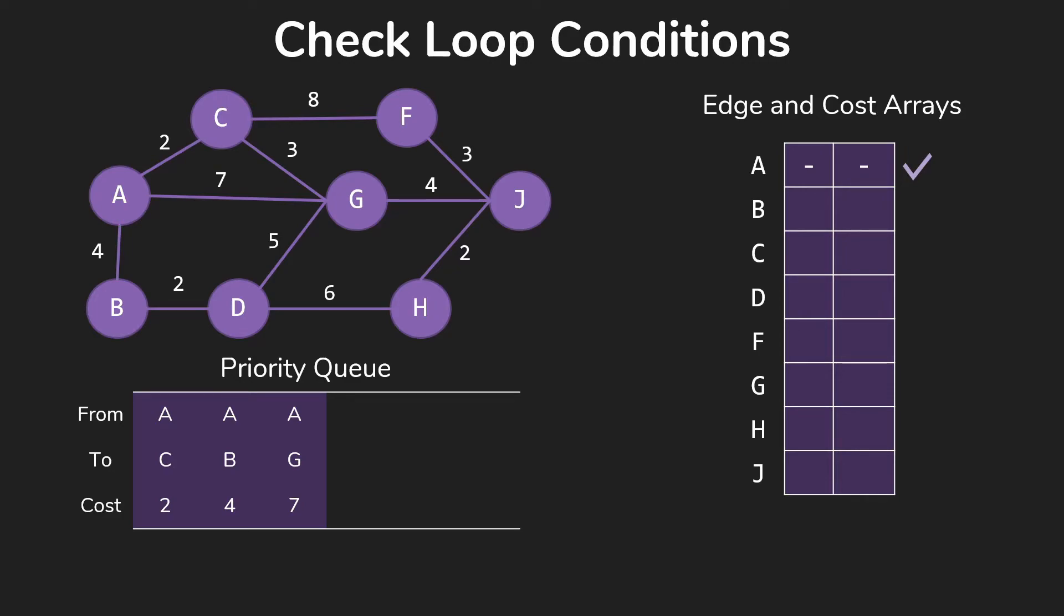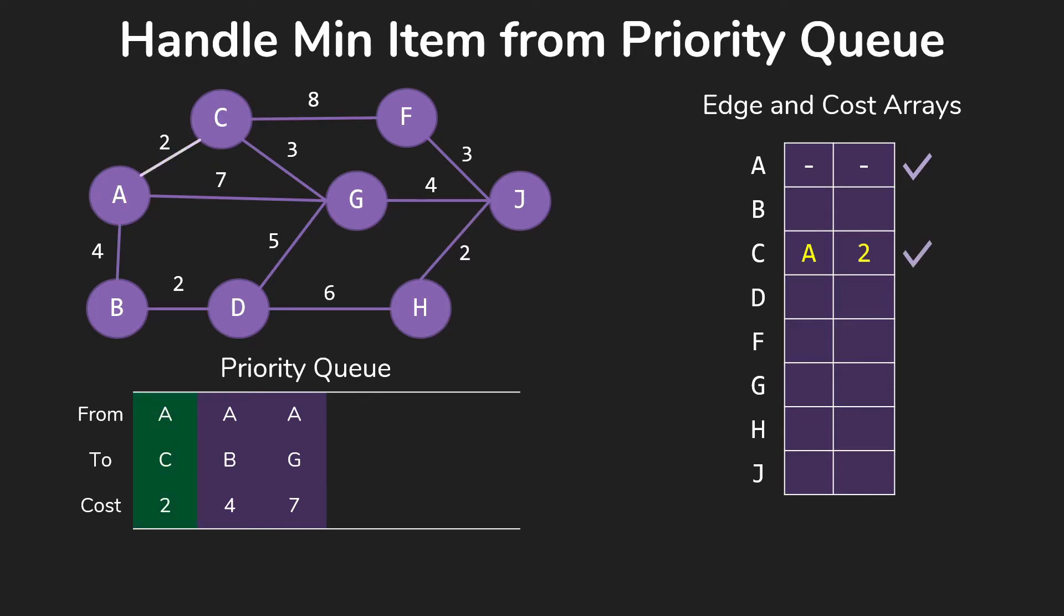We'll check our loop conditions. We haven't stopped. We'll pull AC for 2 off. I'm noting in the graph as we add edges to the tree, I've changed the color of those edges so that we can see our spanning tree as we're building it up.